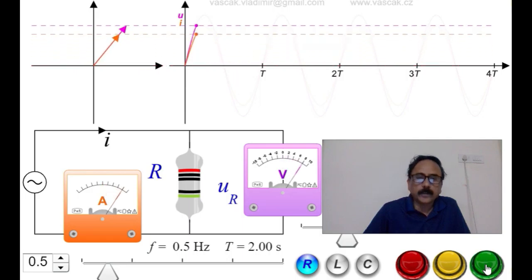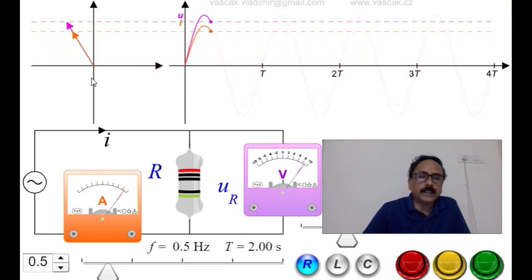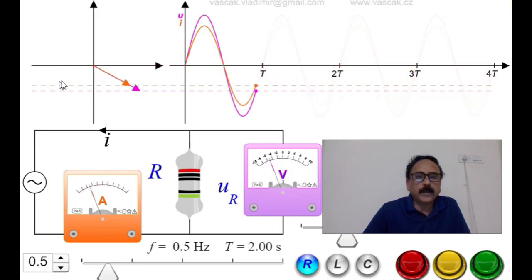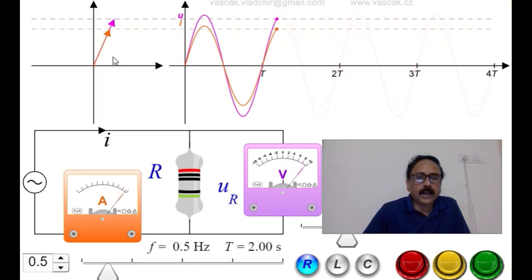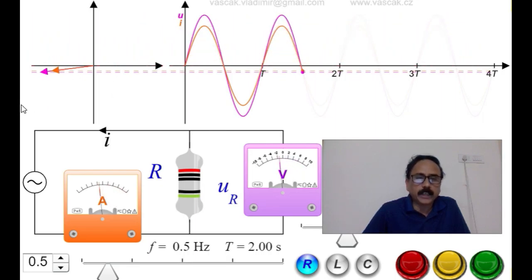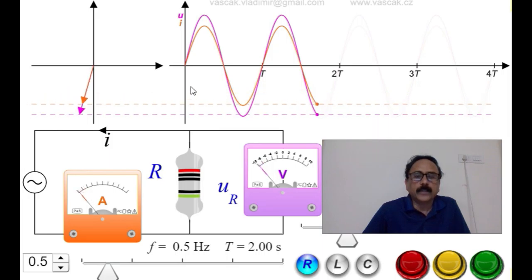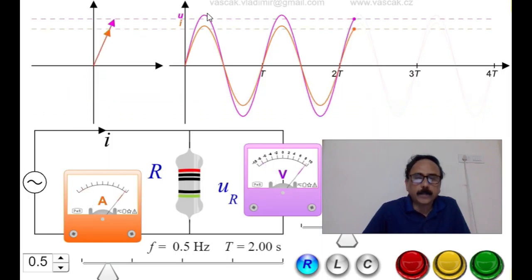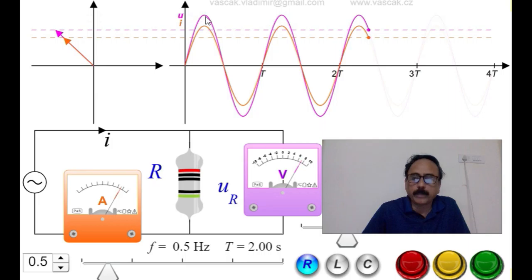Just now we have discussed the resistance when it is connected across an AC source. So, we talked about that the current and the potential difference will be in phase. Let's watch this animation. A beautiful animation from physics animation site. Let's begin.